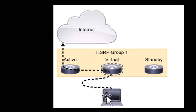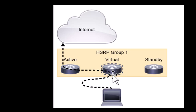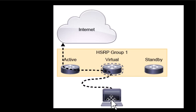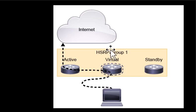Imagine a PC — the PC has a gateway address, and that is where it sends all of its packets. If you cannot ping the gateway you have no connectivity to the internet or outside of your network. Therefore if the gateway fails, the PC loses connectivity to your network. So it is very important for network admins to keep redundancy for the gateway IP address — that is where HSRP plays a key role.